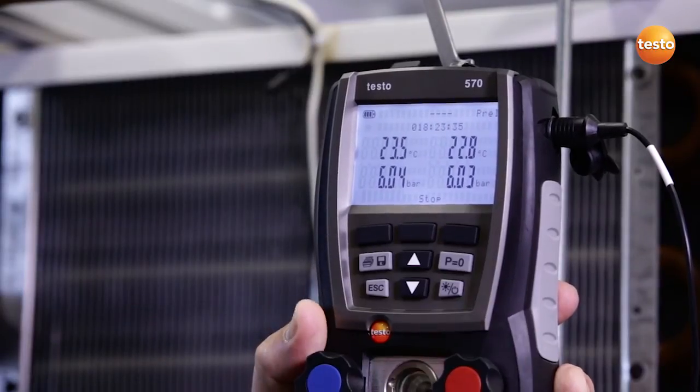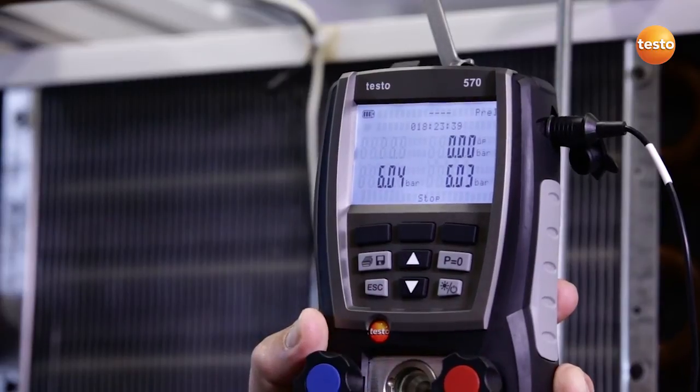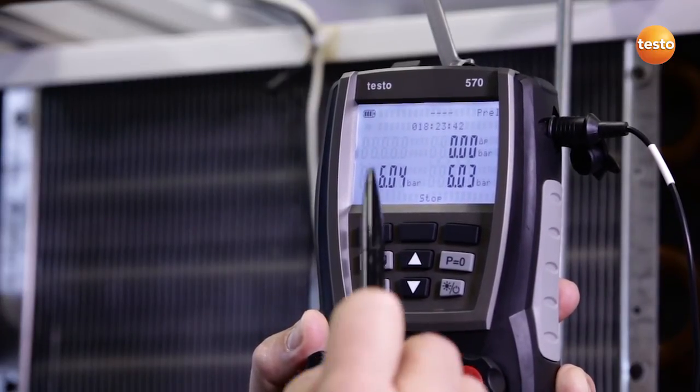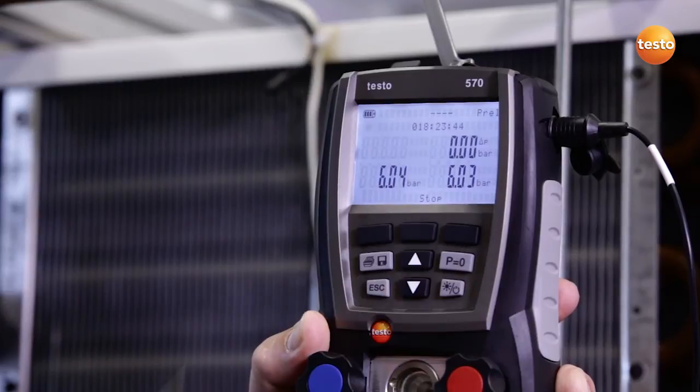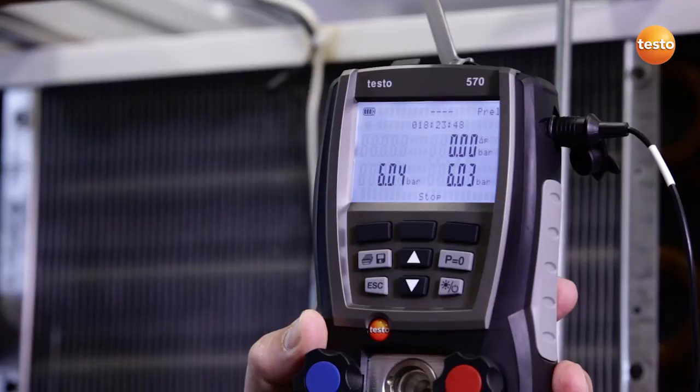This identifiable slight pressure drop could indicate a leak, however, thanks to the temperature compensation, the instrument shows us a pressure drop of 0.00 bar. This means the result of the pressure drop test is positive.